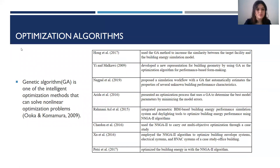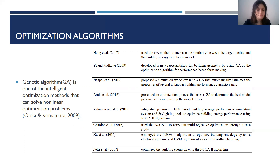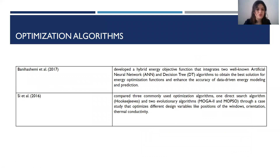Genetic algorithms are one of the intelligent optimization algorithms that can solve non-linear optimization problems. In this table, you can see the studies which used genetic algorithms to optimize building energy performance. Some of the studies used genetic algorithms platforms after adopting the energy performance results from the BIM-based model. Some integrated BIM-based building energy performance simulation systems and daylighting tools, and then used genetic algorithms for optimization. In another study, a hybrid algorithm was used, integrating two well-known methods — artificial neural network and decision tree algorithms — to obtain the best solution for energy optimization functions and enhance the accuracy of data-driven energy modeling and prediction.